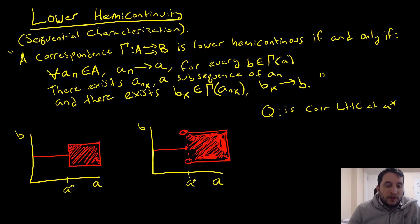So in terms of lower hemicontinuity, we say a correspondence gamma is lower hemicontinuous if for every A_n in A, A_n goes to A, meaning that we're able to reach a point A with that sequence. And for every B in gamma, which is just whatever value is spit out from gamma A, there exists a A_nk, which is a subsequence of A_n, and there exists a B_k in our gamma evaluated at A_nk, and B_k converges to B. So let's check this one by one.